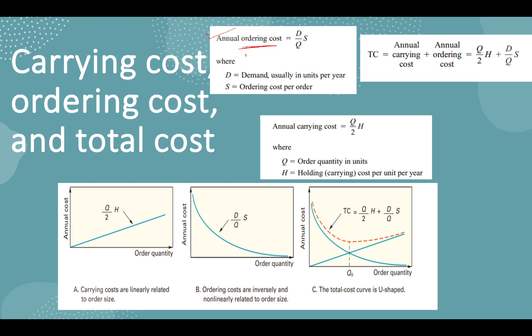Then we have annual carrying cost, which is Q by 2 into H. Q is your EOQ, H is your holding cost per unit. And the total cost will be the sum of annual carrying cost plus ordering cost.